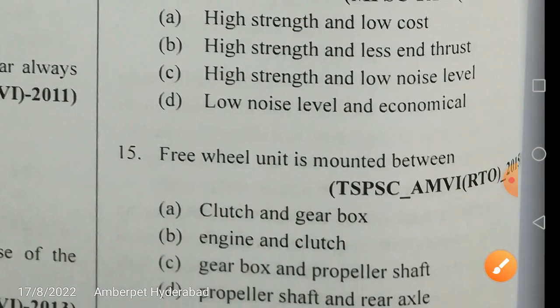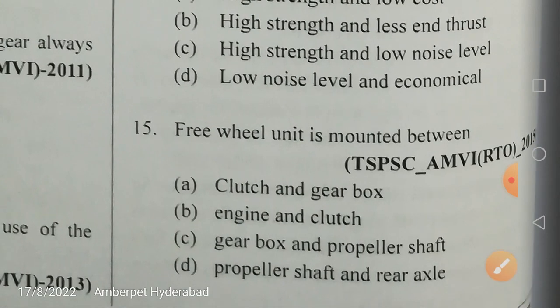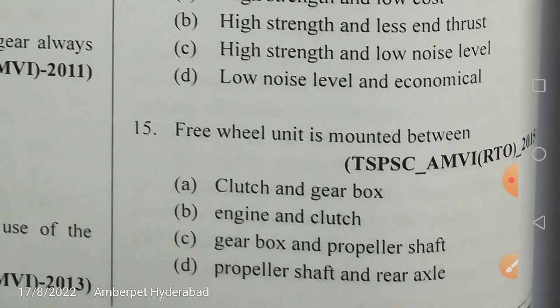The freewheel unit is mounted between the gearbox and propeller shaft — that is the correct answer. In this video we discussed some important questions from automobile engineering, second paper optional, relevant to the TSPSC examination for AMVI or Motor Vehicle Inspector. In the next video we will cover more good questions. All the best!